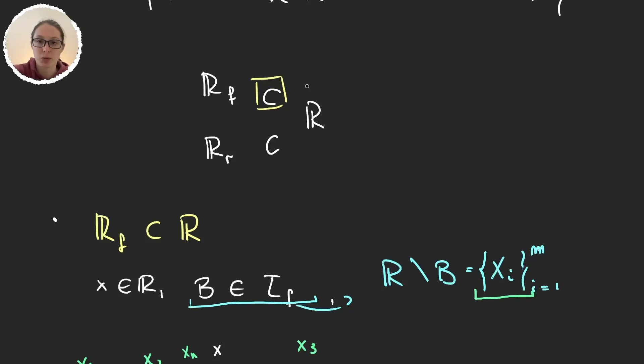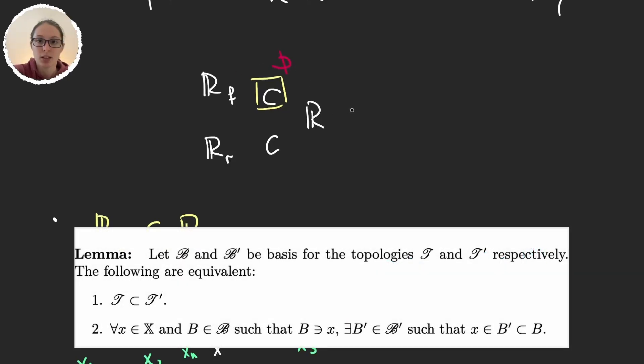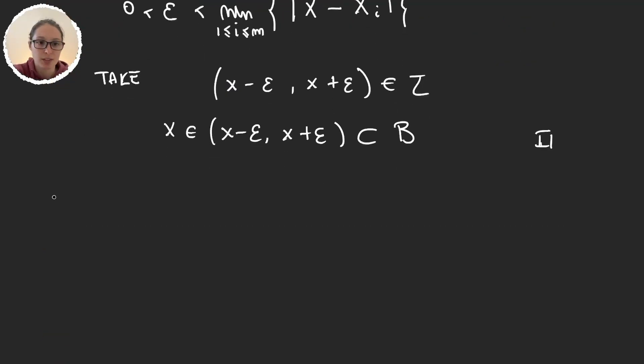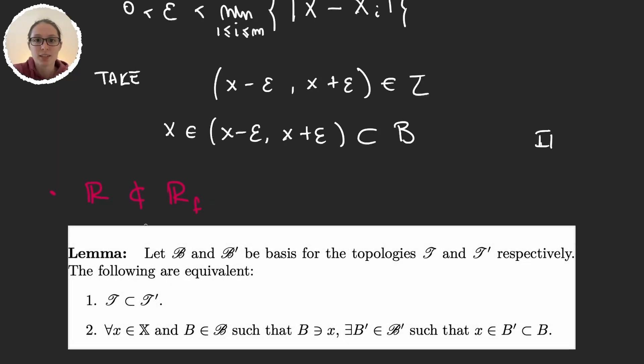But one thing we also have to prove is that the standard topology is not included in the finite complement topology. So for that we will again use this lemma, because the lemma was an equivalence. But now, this is going to be very simple. So let's now prove that R is not a subset of the finite complement topology. So now, to negate the lemma, I have to grab a specific x and a specific neighborhood in the standard topology.